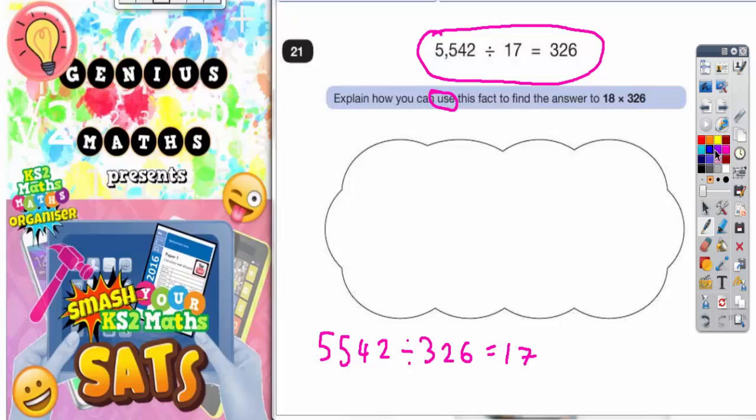But another fact that is true is that if you multiply the two smaller answers together, you would actually get 5,542. So, in other words, 17 times 326 would get you back to what you originally started with, which would be 5,542. If you multiply the two smaller numbers together, you'll get back to the larger number.